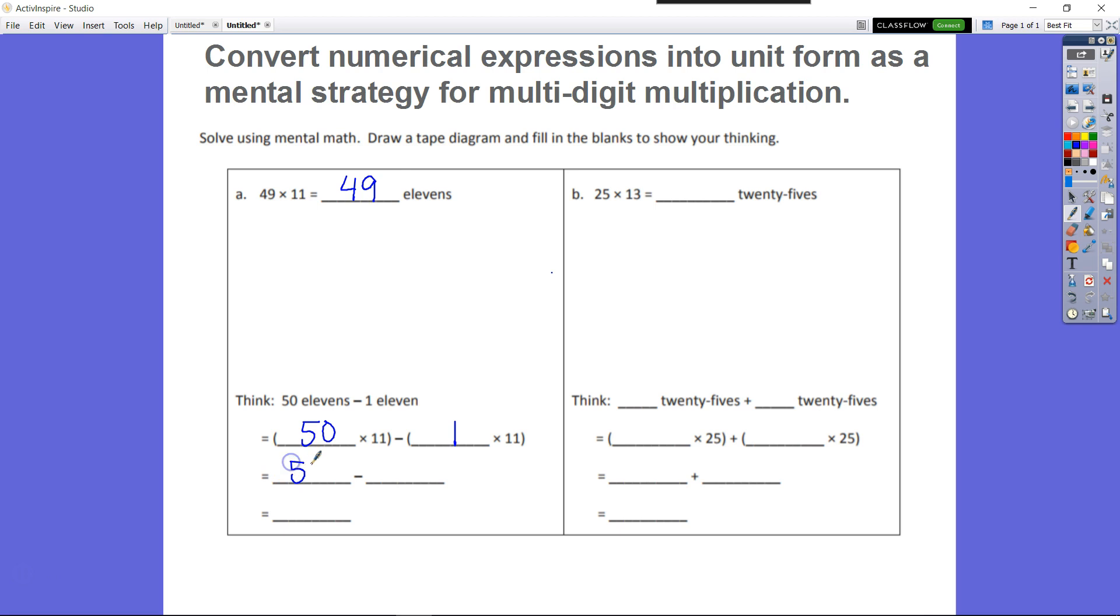And we have 50 times 11. Well, I know that 5 times 11 would be 55, and we had 5 tens times 11, so that would be 550. And 1 times 11 is simply 11. We do our subtraction: we have 550 take away 11. We have to regroup one of our tens as 10 ones. We have 9, 3 tens, and 5 hundreds.